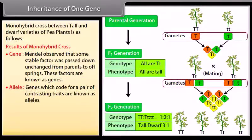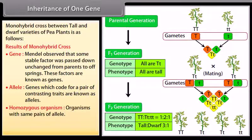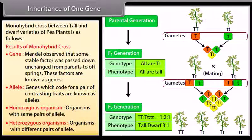Allele: Genes which code for a pair of contrasting traits are known as alleles. Homozygous organism: Organisms with same pairs of alleles. Heterozygous organisms: Organisms with different pairs of alleles.